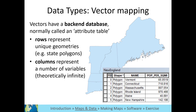The back-end database is called an attribute table. Each row is equivalent to one feature on the map. In this example, each row represents a different state polygon.